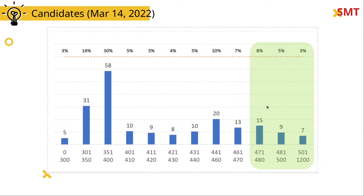We have about 36,000 candidates in the pool who comprise about 16 or 17 percent of the total pool. These people have a score of 471 points and above. This data includes all candidates whether they are under CEC, PNP, or federal — I cannot stratify by stream at the moment. Generally, these people will get an invitation.